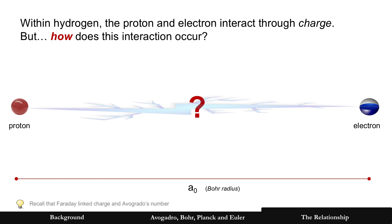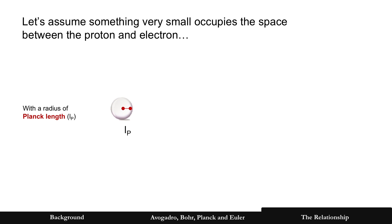Back to hydrogen, since it's the simplest one. Now, within hydrogen, the proton and electron interact through charge. And now you see the Bohr radius there, the most probable distance in hydrogen. Faraday found that the Avogadro number is linked through charge. But really, how does that interaction occur between the proton and electron? So let's assume something really small occupies that space between the proton and electron, something we can't see and we'll never be able to see because it's too small. Something with a radius of Planck length.